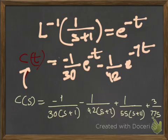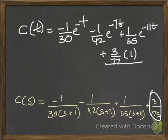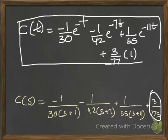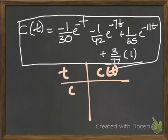Also remember that the inverse Laplace of 1/s is 1, so the final term gives 3/77 · 1. This completes the equation for the time response c(t). From this equation we can calculate the unit ramp response values and plot the ramp response of the given transfer function. Taking t on the x-axis and c(t) on the y-axis, write down the values for different t.